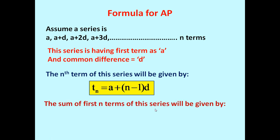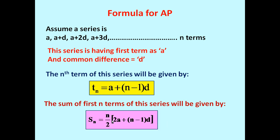If we want to determine the sum of the first n terms of this series, the formula is: Sn equals n by 2 into (2a plus (n minus 1) into d). This is the formula used for finding the summation of the series.